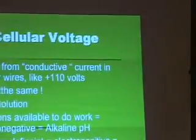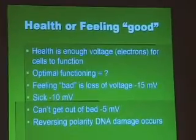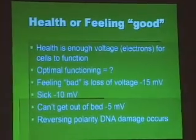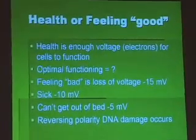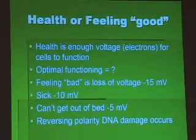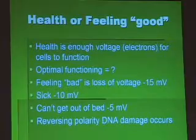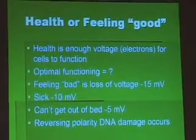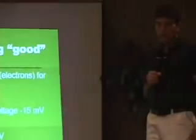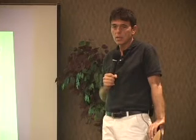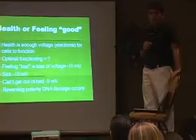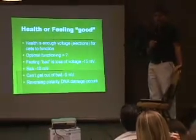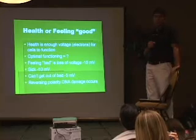An electron-deficient, electropositive state is an acid pH. Health is having enough voltage or electrons for cells to function at optimal levels. What is optimal functioning for a human being? We know what it is for bears and goldfish, but we have no clue for human beings. We know Einstein used about 7 to 8 percent of his brain. Before the flood, people were living about 912 years, and there are guys in places like Machu Picchu fathering children at the age of 110.